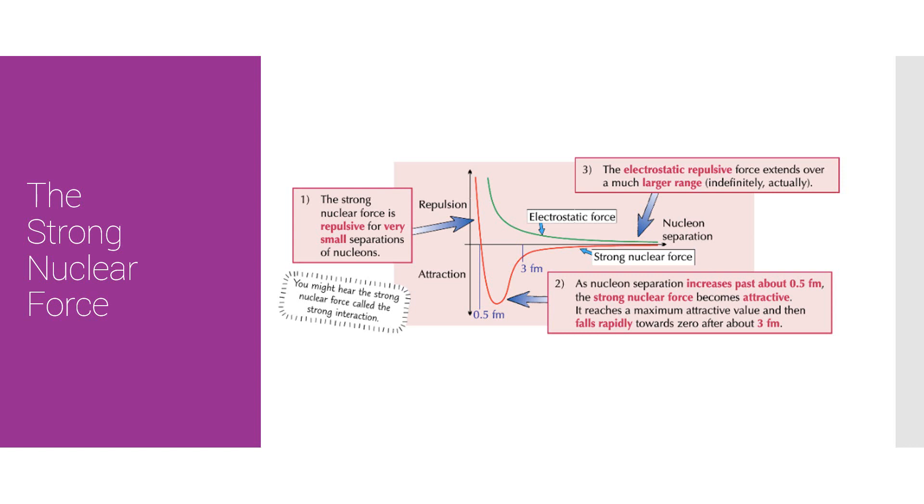The electrostatic repulsion always exists. It is completely indefinite. It's very high when the strong nuclear force is very high and then it's very low when the strong nuclear force is also low.